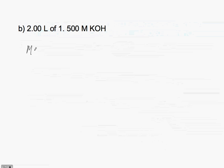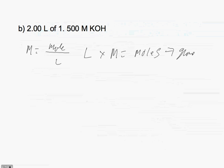Let's look at another problem. Here we have: how much solid would we need if we have 2 liters of a 1.5 molar KOH solution? We use the same approach — molarity equals moles per liter, so volume times molarity equals moles. We have 2.0 liters times 1.5, which gives us a total of 3 moles of potassium hydroxide.